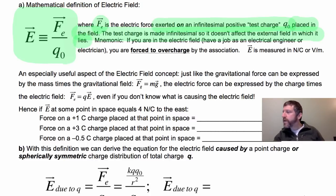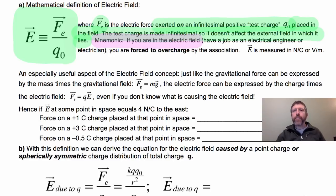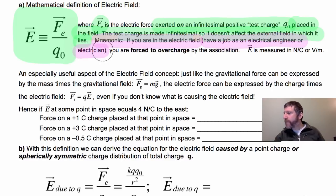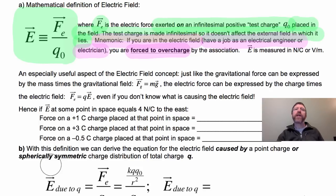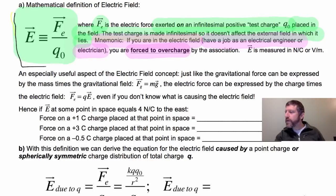This is so important that we have to have a mnemonic for this relationship. If you are in the electric field — maybe you're an electrical engineer, an electrician, or you work on electric fields in biology — you are forced to overcharge by the Association of Electrical Engineers. They always say you can't charge that little. So: if you're in the electric field, you are forced to overcharge. That mnemonic helps us remember that electric field is force over charge.